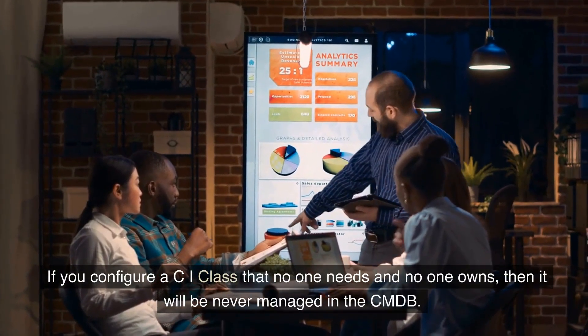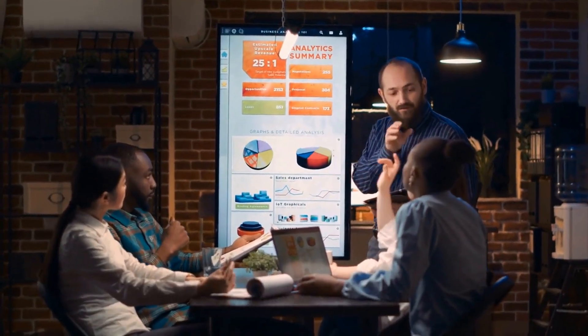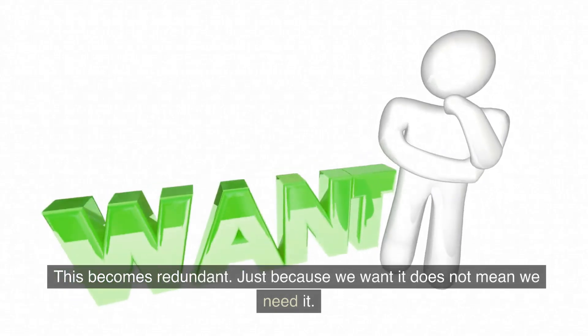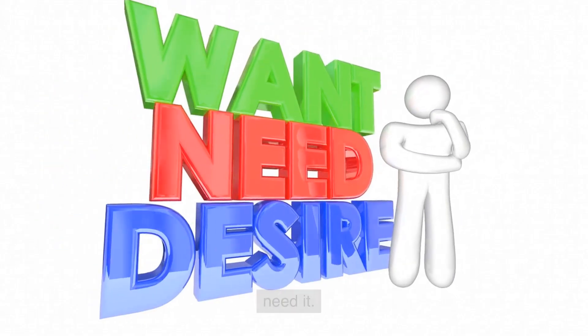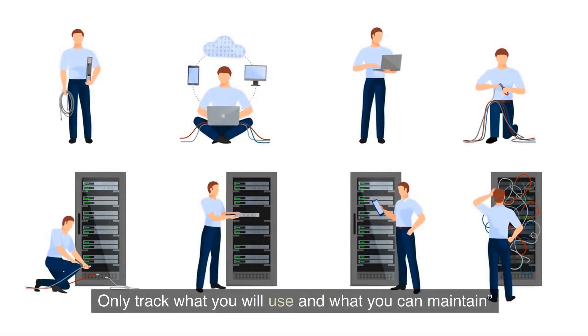If you configure a CI class that no one needs and no one owns, then it will be never managed in the CMDB. This becomes redundant. Just because we want it does not mean we need it. Follow the rule of thumb. Only track what you will use and what you can maintain.